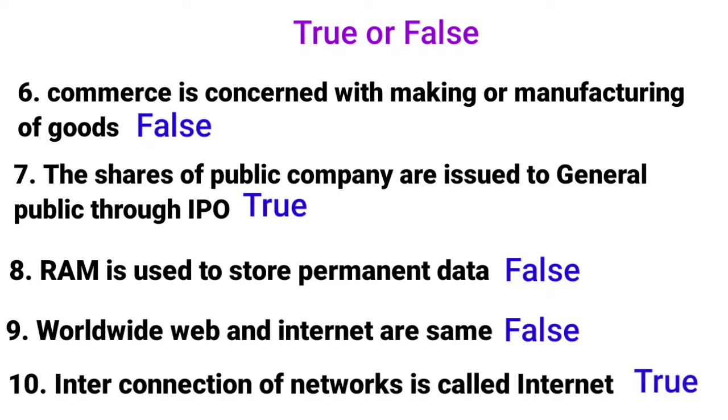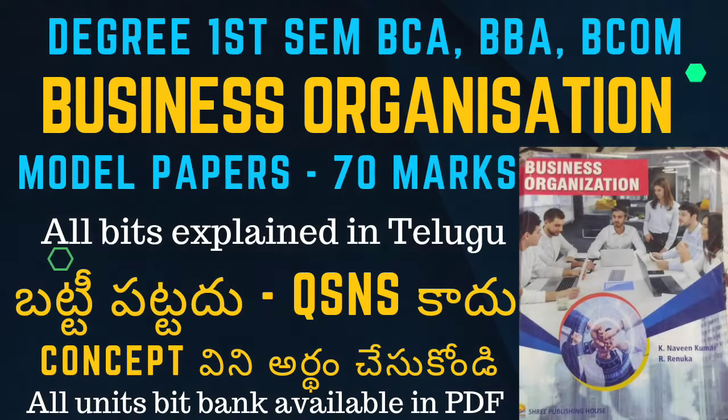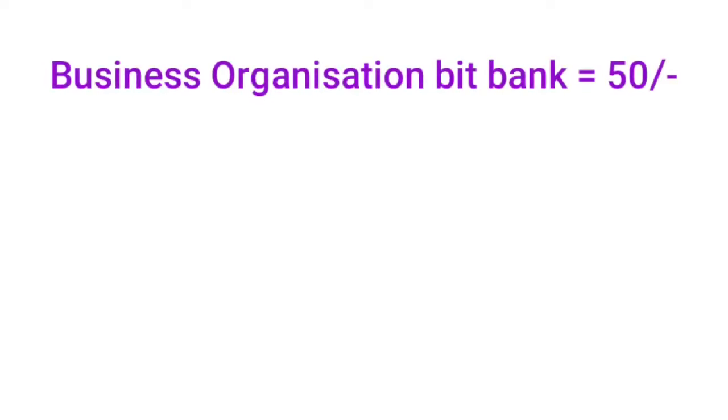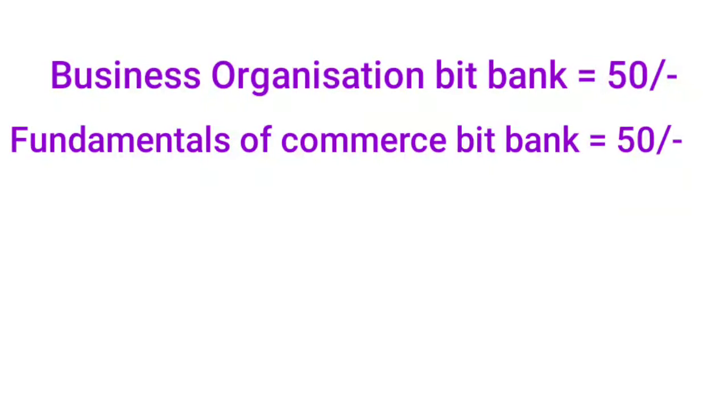That's it about the Business Organization model paper. I explained every concept along with the questions and answers. Two more model papers are available in the description box. There's also an all-units bit bank PDF available for a small charge — mail me if you want the PDF. Notes for other subjects are also available.